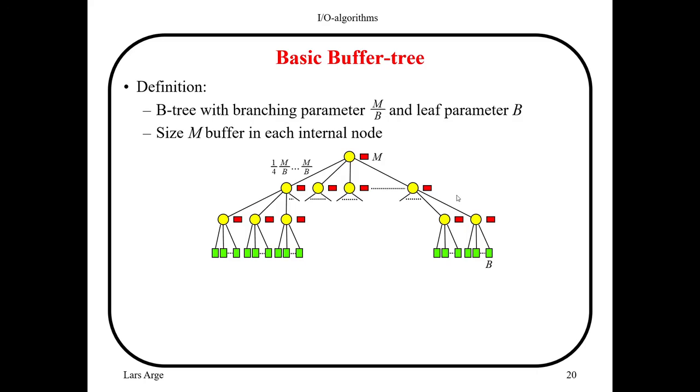Now we look at buffer tree in a little bit more detail. So first of all, it is essentially a B-tree, but we have different branching parameters for the internal nodes and the leaf nodes. The leaf nodes have roughly B elements in them, in other words, between B and B over 4 elements, whereas internal nodes have between M over B and M over B over 4 degree. And on top of that, every node has a buffer of size M, but only for the internal nodes.